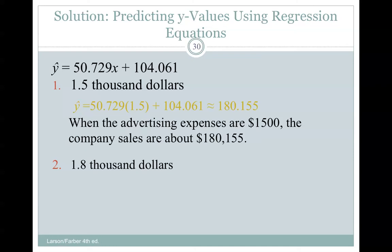And there you get, when expenses are 1,500, company sales are about 180,115. And this 1,500 is 1.5 thousand just written in a different way.